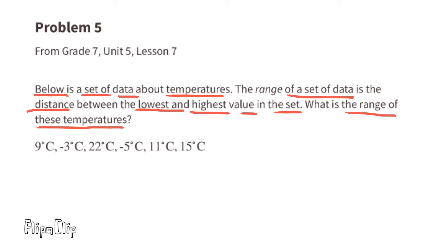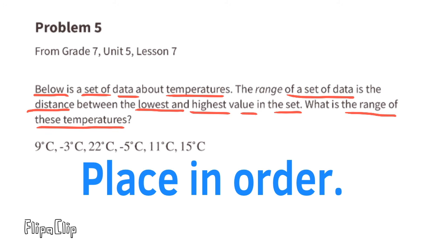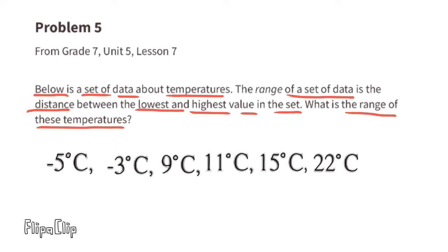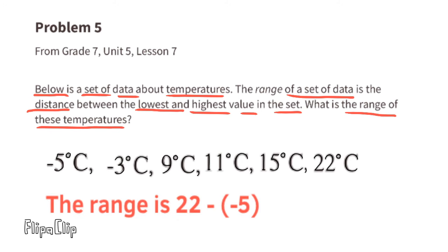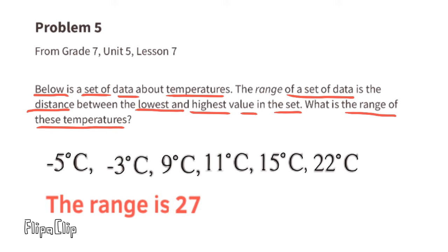Problem number five from seventh grade unit five lesson seven. Below is a set of data about temperatures. The range of a set of data is the distance between the lowest and highest value. First, put the temperatures in order from least to greatest. The range goes from negative five to positive 22. To find the distance, subtract the lowest from the highest: 22 minus negative five. Minus a negative is the same as plus, so 22 plus five equals 27. The range of these temperatures is 27.